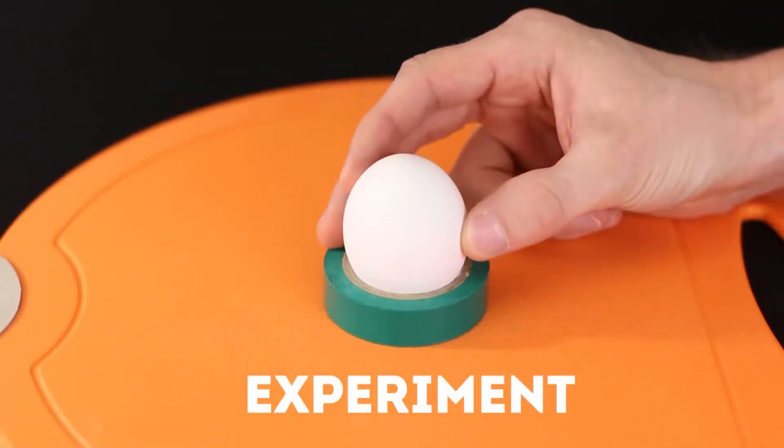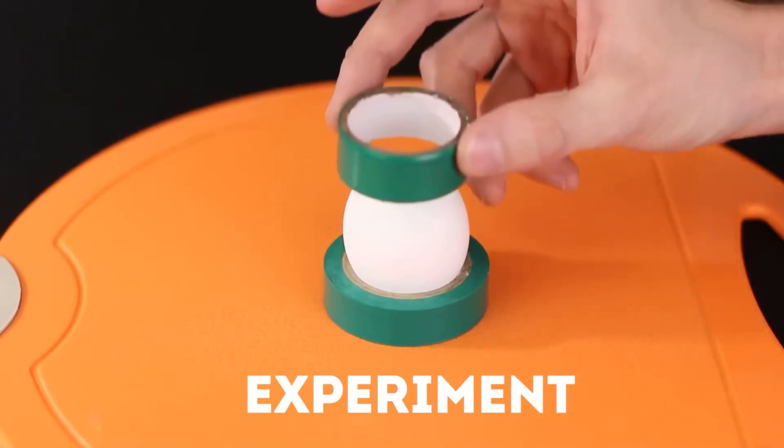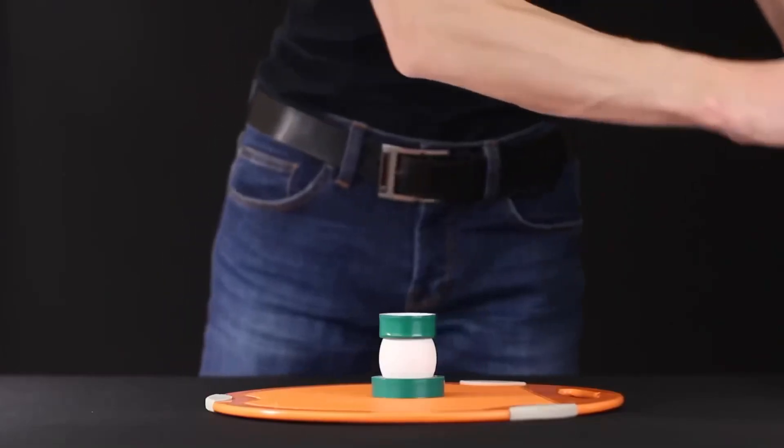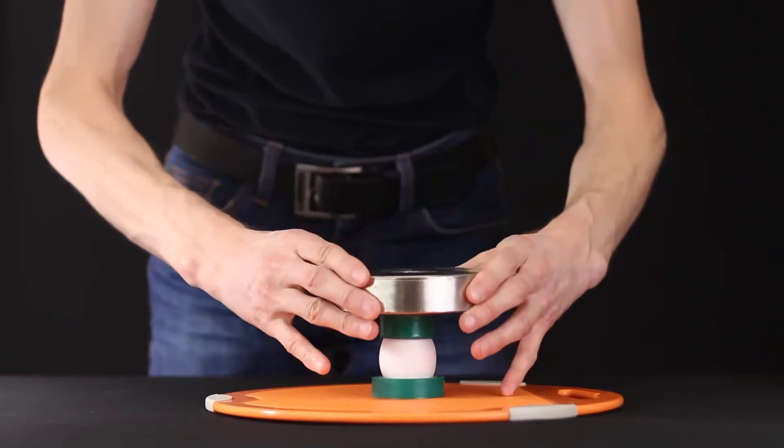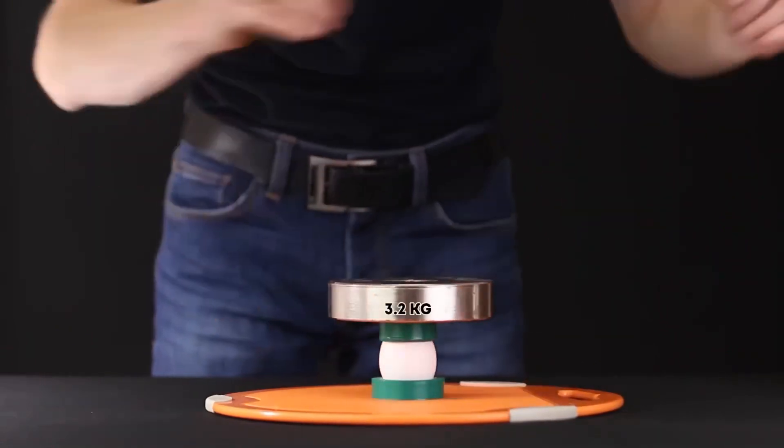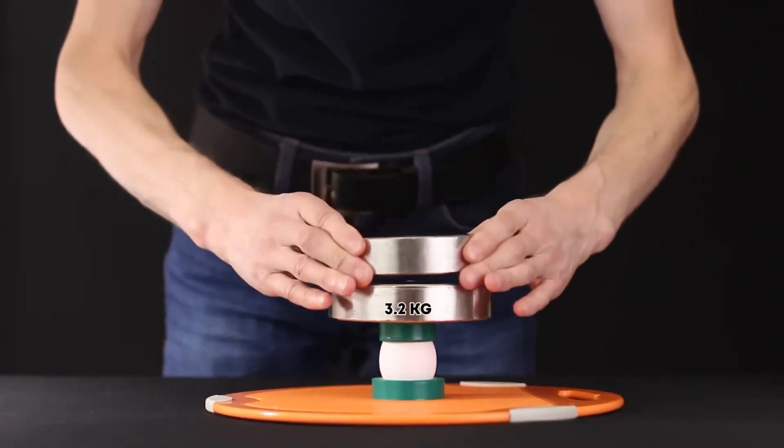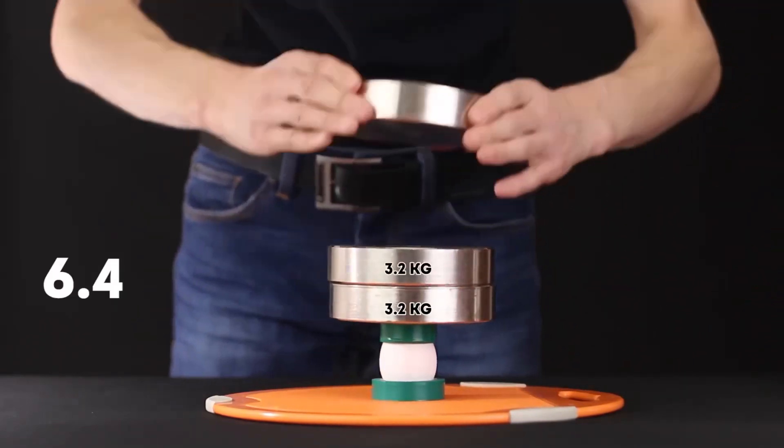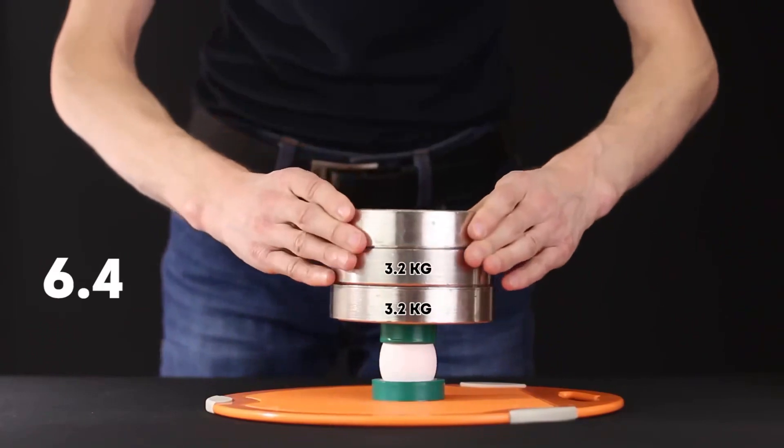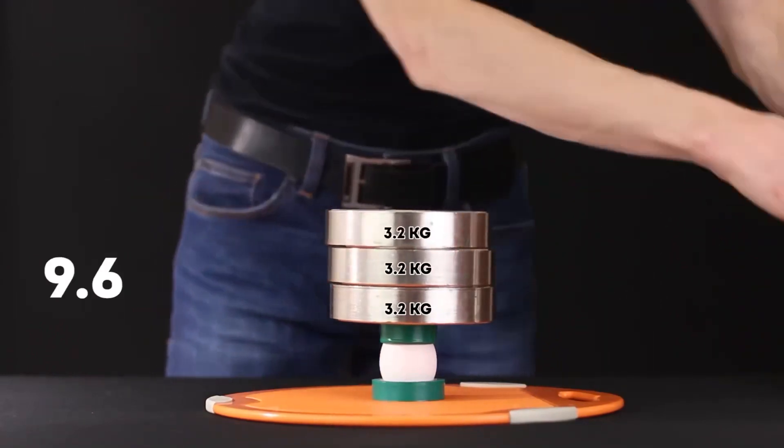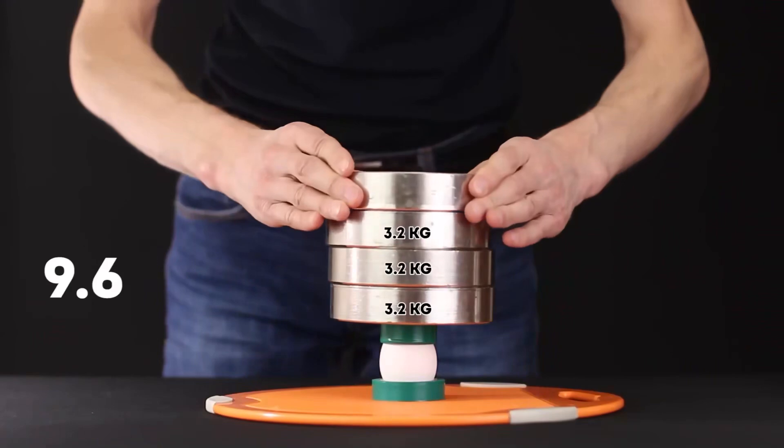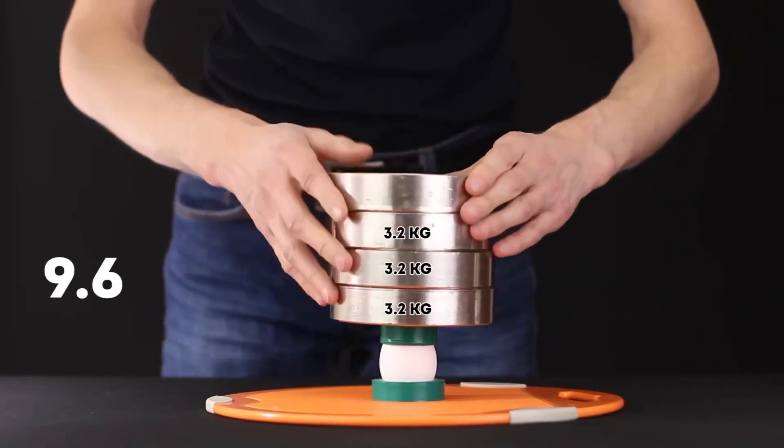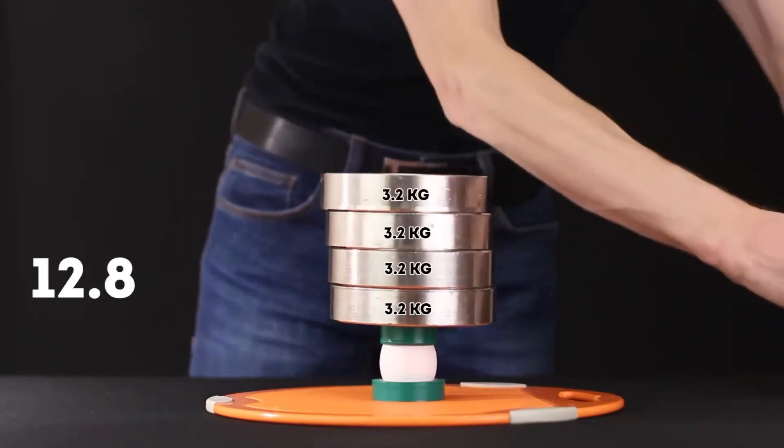Well at the end we will conduct a small crash test of an ordinary chicken egg. We will fix the egg on two coils of duct tape and gradually put barbells weighing 3.2 kilograms on top. Let's see how much of that it can withstand. Three kilograms, six kilograms, nine kilograms. Wow, I didn't think it could withstand so much. 12.8 kilograms.